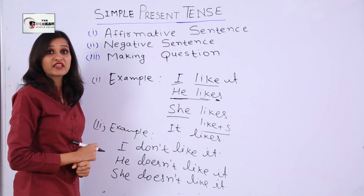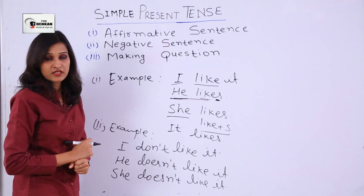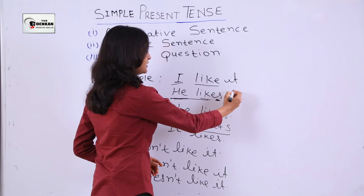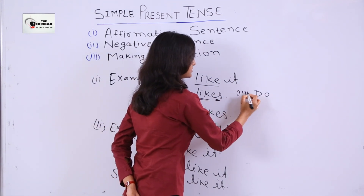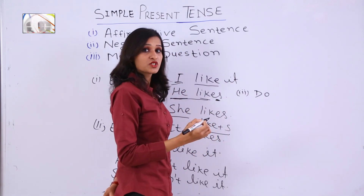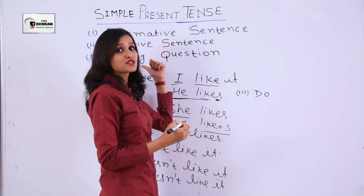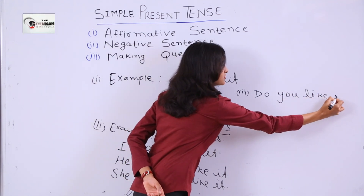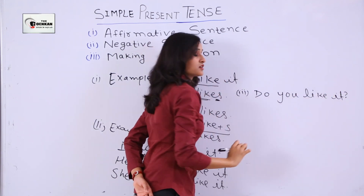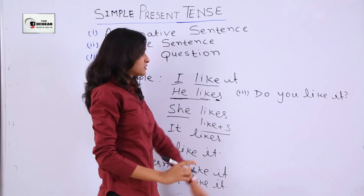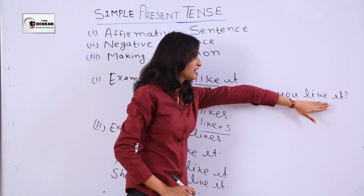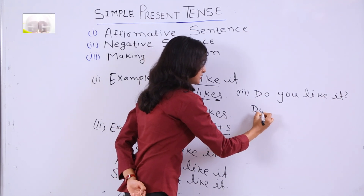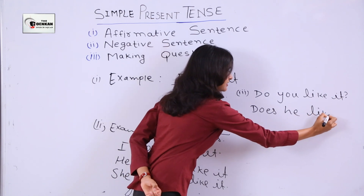Next is making questions — yes or no questions. How will we make a question in simple present tense? Look at the examples. Number three: we are discussing making questions. For example: 'Do you like it?' Of course, when we make a question, there should be a question mark at the end. The next example is: 'Does he like it?'